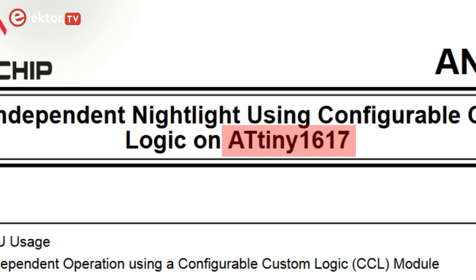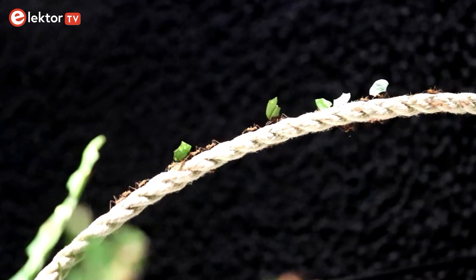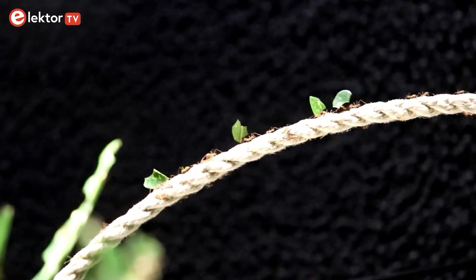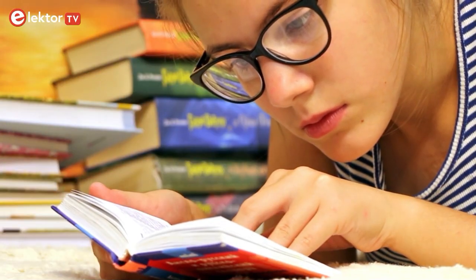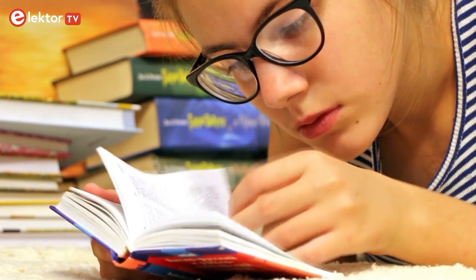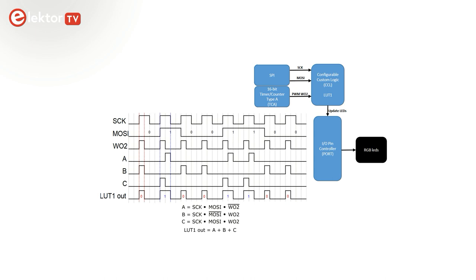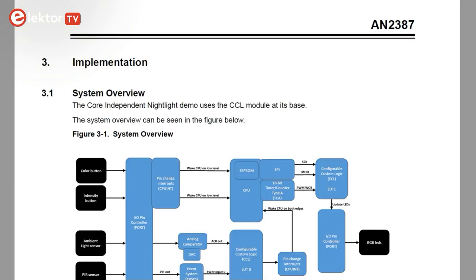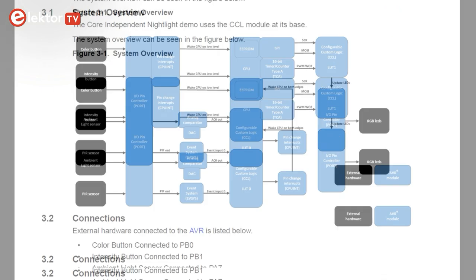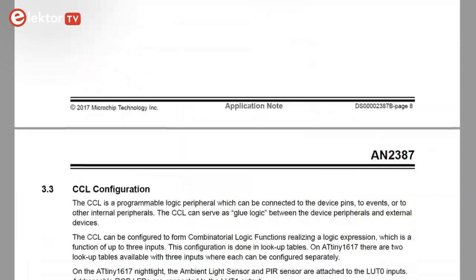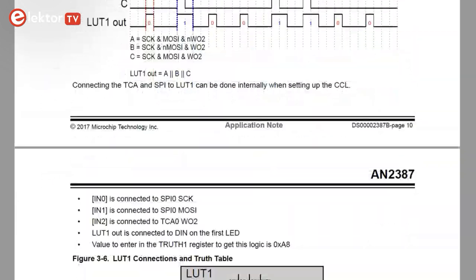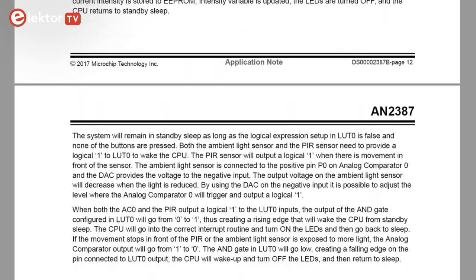This application note targets the ATtiny1617 and not the ATmega4809, but they have similar peripherals. Most of the porting of this code to the Arduino Nano Every therefore consists of carefully reading the datasheets and applying changes to registers where needed. Note that I ported only the NeoPixel part and not the complete nightlight application. Also, as the operating principles and technical motivations are clearly described in the application note, I will not repeat them here. Just open the link from the description below.